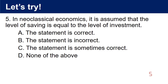Question 5: In neoclassical economics, it is assumed that the level of saving is equal to the level of investment. A. The statement is correct. B. The statement is incorrect. C. The statement is sometimes correct. D. None of the above. The answer is A. The statement is correct.